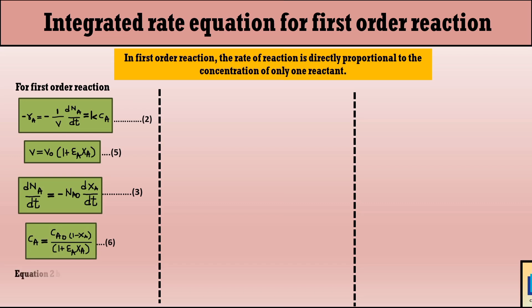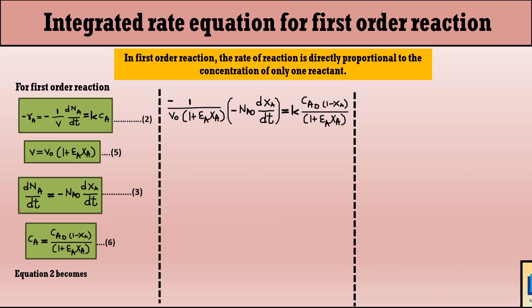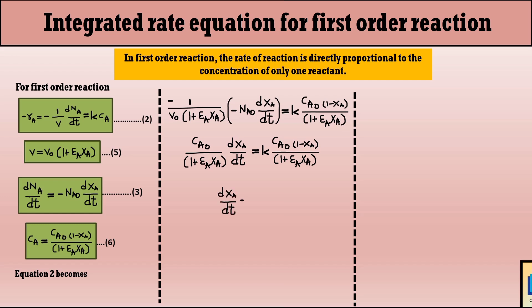After substituting and simplifying, we can cancel the minus sign on the left-hand side and replace N_A0/V_0 with C_A0. We then observe that both sides share the common term (1 + ε_A·X_A), which cancels out from both sides. Hence the equation simplifies to: dX_A/dT equals K·(1 − X_A). This is the simplified form of equation 2.